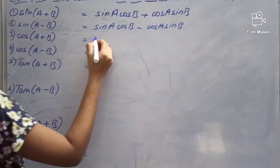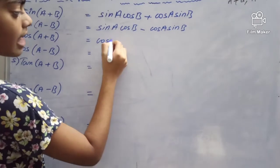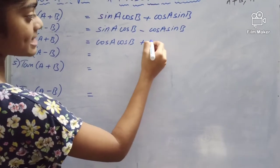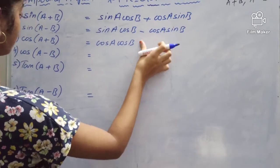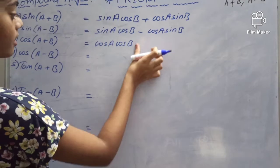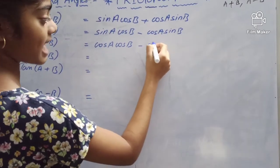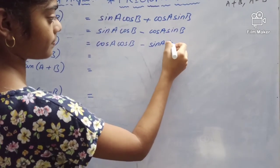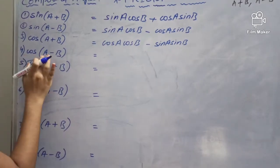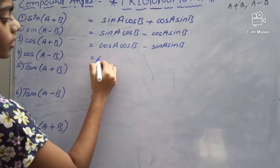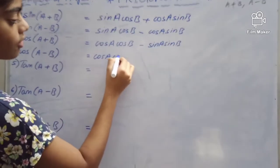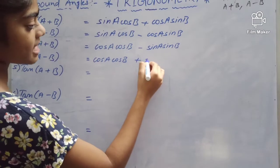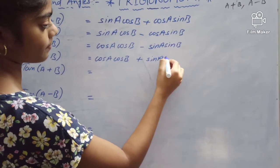Cos of A plus B equals cos A cos B minus sine A sine B. Cos of A minus B equals cos A cos B plus sin A sin B.